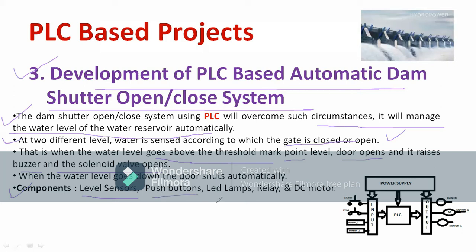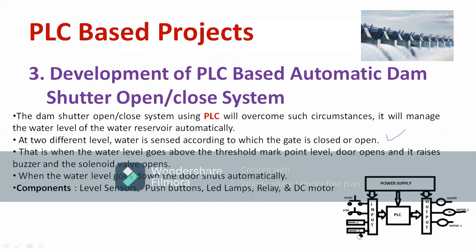Components required include a level sensor, push buttons, LED lamps for indication, a relay, and a DC motor for opening and closing the dam gate. The block diagram shows inputs — sensors and push buttons — connected to the Programmable Logic Controller, whose output is connected to a buzzer or alarm, DC motor for position change, with 24V power supply. This is how you implement the PLC-based automatic dam shutter open and close system.